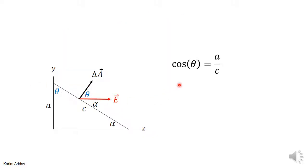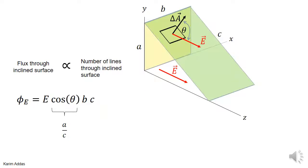Now we can easily find cosine theta from the triangle. Cosine theta equals adjacent over hypotenuse, which is A over C. We substitute A over C in place of cosine theta in our flux equation.